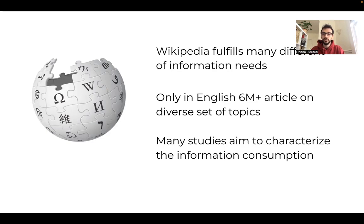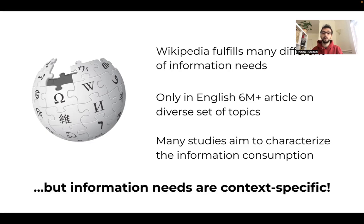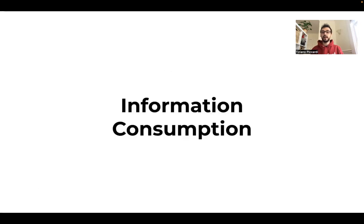Given the importance of Wikipedia for the information ecosystem, many studies aim to characterize the information consumption on the website. However, it's important to take into account that the information needs are context-specific. Many factors can impact the information consumption.